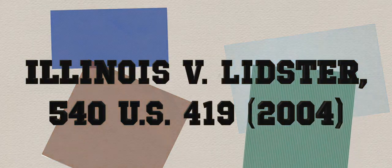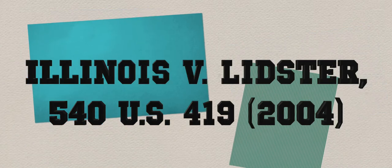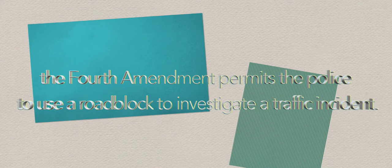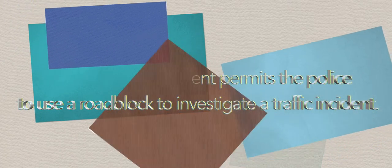The first case that we're going to go over is Illinois v. Lister, 540 U.S. 419, 2004. It's a simple case because what it says is the Fourth Amendment permits the police to use a roadblock to investigate traffic incidents. Basically, that's one of the clauses because there is damage to property.